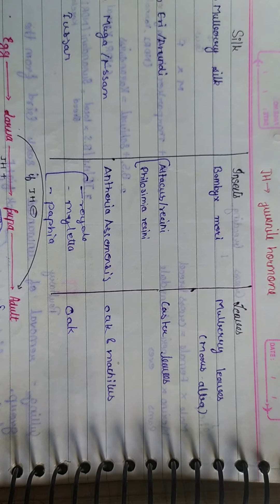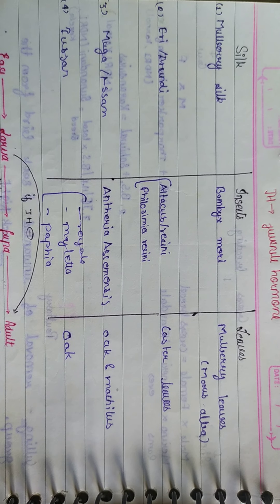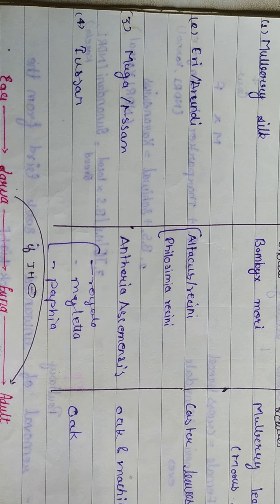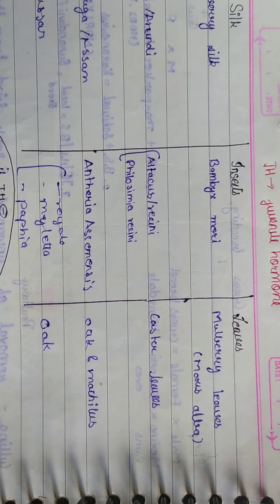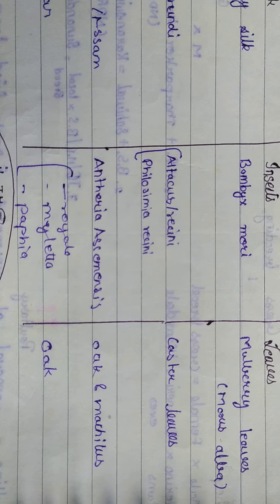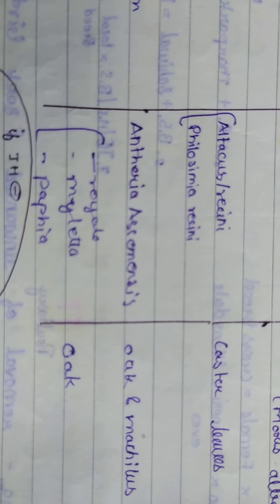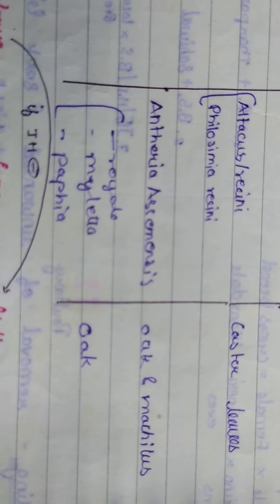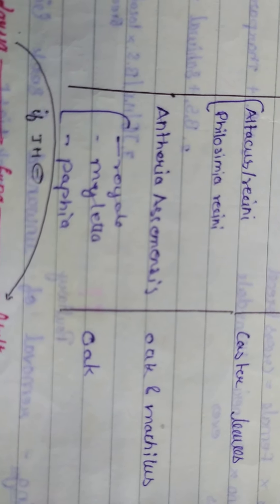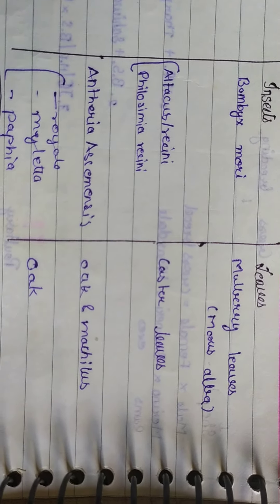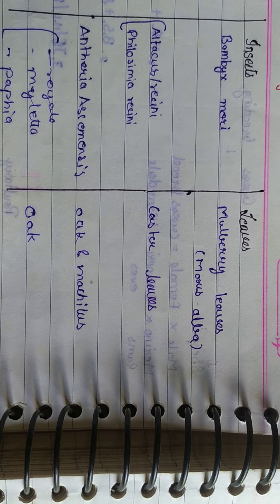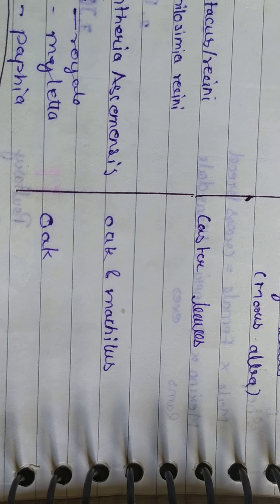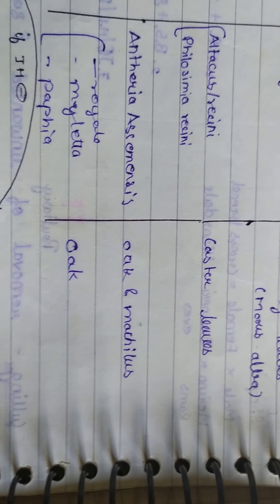Types of silk include mulberry silk from the silkworm Bombyx mori, Eri silk from Attacus ricini, Muga silk from Philosamia ricini found in Assam, and Tussar silk from Antheraea mylitta. These insects feed on mulberry leaves (Morus alba), castor leaves, oak, and Machilus oak leaves respectively.